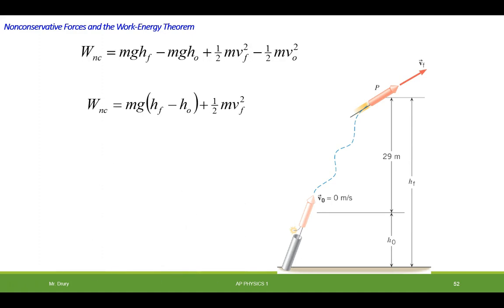All right, so here's our equation again, and I'm rewriting it in a slightly different format here, where I factored out the mg and I found out that it's h final minus h initial. And the kinetic energy initial is zero, so I eliminate it. So I just have delta PE plus KE would be equal to work non-conservative.